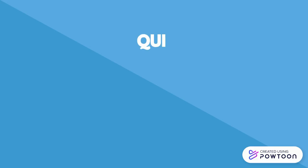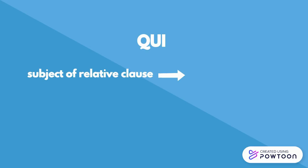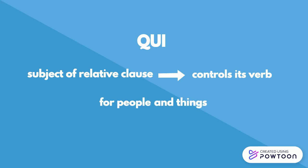Qui is always used as the subject of the relative clause, which means that it controls its verb. In contrast with English, French does not make a difference between subjects that are people and subjects that are things — it is always qui.